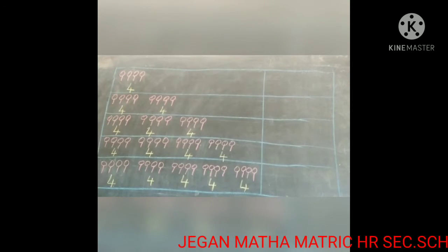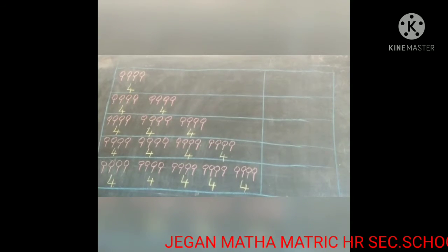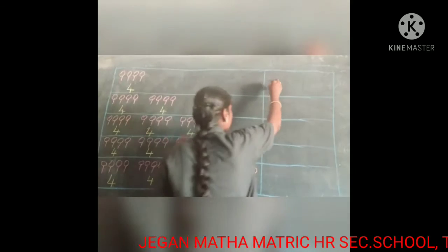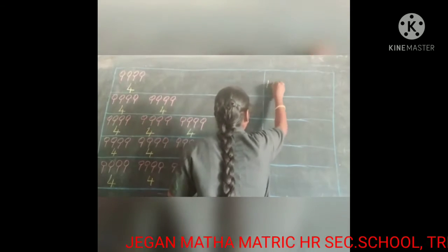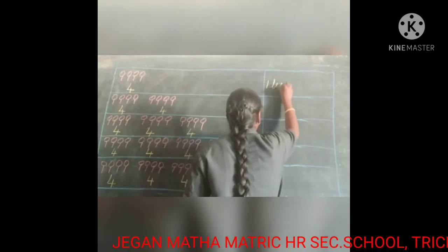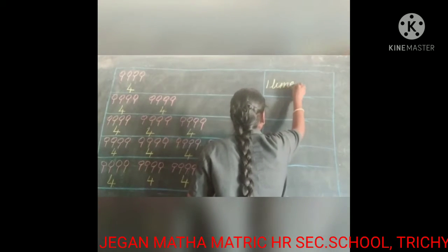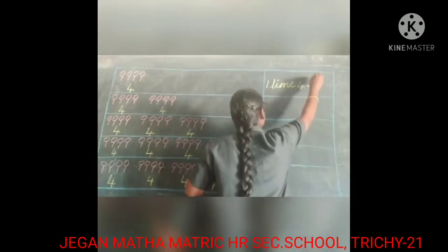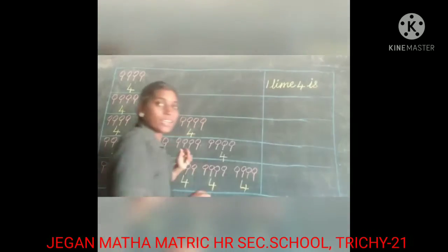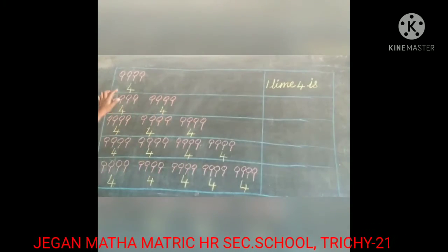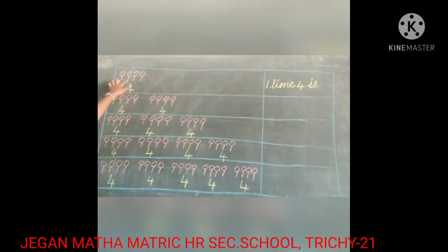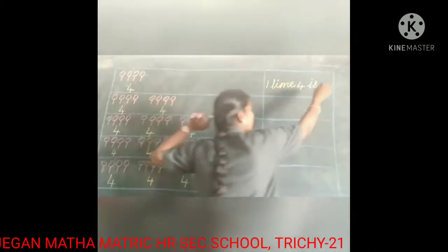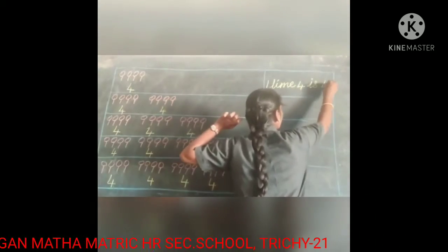One time only the 4 came. So we have to write: one time 4 is... How many totally? Count: 1, 2, 3, 4. One time 4 is 4.